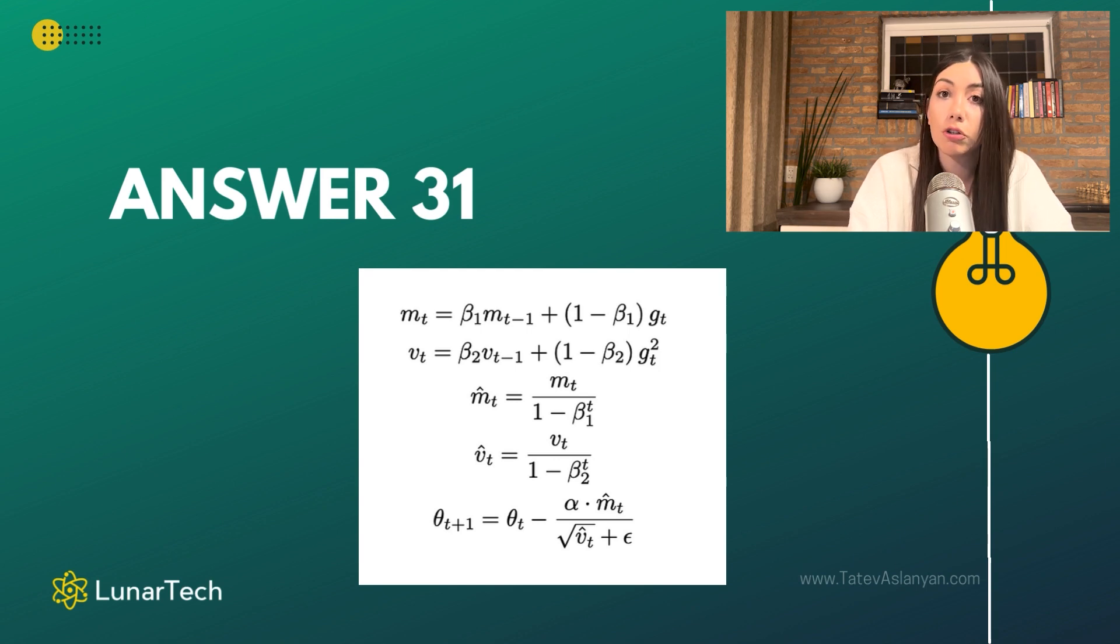As you can see here, what we are doing is taking the learning rate alpha, multiplying it by the adopted and adjusted momentum term, and then dividing it by the square root of this velocity term, or VT hat, plus some epsilon, which is usually a small number just to ensure that we are not dividing this number by zero. We are using this to subtract from theta T, the current parameter, to get our new updated parameter theta T plus 1.